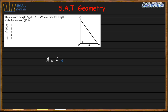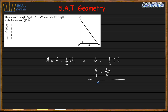We know that the area is half base times height. If the base is 4, then 6 equals half times 4 times height, so 6 equals 2 times the height. Dividing both sides by 2, the height is 3. So QP is 3, making this a 3-4-5 triangle.